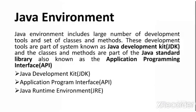Now we will discuss the Java environment which is needed for developing Java programs. The Java environment includes a large number of development tools and also a set of classes and methods using which we can build our Java program. These development tools are part of a system known as the Java Development Kit, or JDK. The classes and methods are part of the Java Standard Library, also known as the Application Program Interface. Normally, the Java environment includes these components: JDK, API, and Java Runtime Environment.